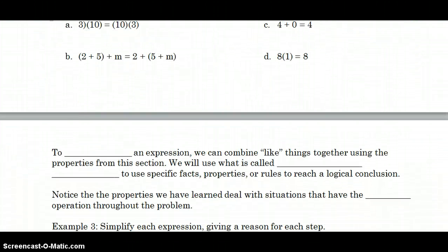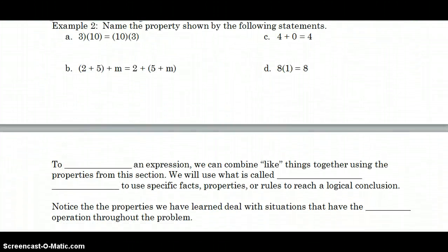Name each of these following properties. See if you can recognize the properties as we go through these problems. 3 times 10 equals 10 times 3. That is the commutative property of multiplication. We went to work, and then from work, we went home.